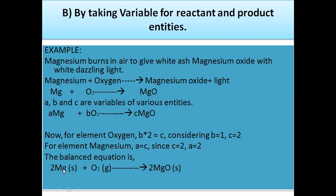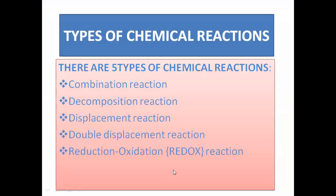Two molecules of magnesium react with one molecule of oxygen to give two molecules of magnesium oxide, specifying the physical state of each entity. With this we complete the balanced equation, the various information, conditions, as well as limitations of equations. We now step forward with types of chemical reactions.